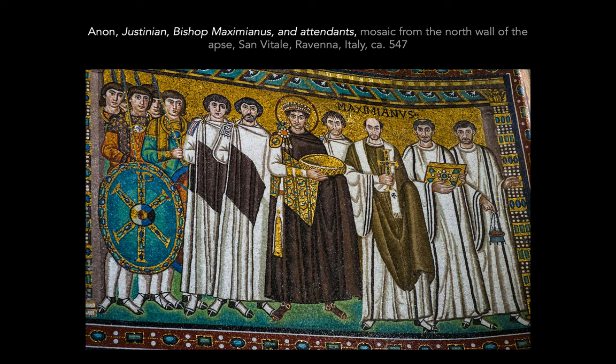There is absolutely no separation of church and state here in the way we might understand today. He's at the center with his attendants — his soldiers are holding a shield, and you'll recognize the symbol: the Chi-Rho symbol, the very symbol that Constantine a few centuries before told his troops to put on their shields at the Milvian Bridge. This has a long history in the Roman Empire and Christianity. Then on this side you have Bishop Maximianus, the bishop of this church. He's holding a cross — the very important symbol for Christians — and his fellow clergymen are next to him, one holding an incense burner.